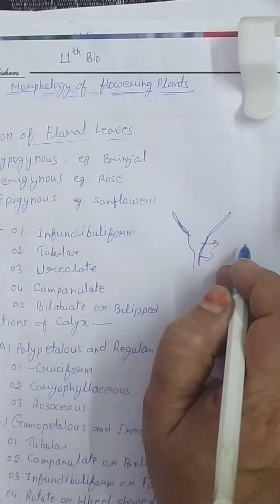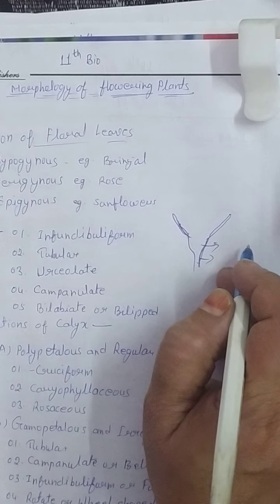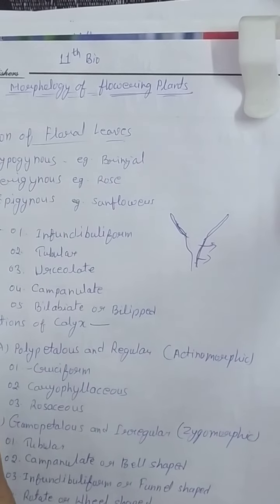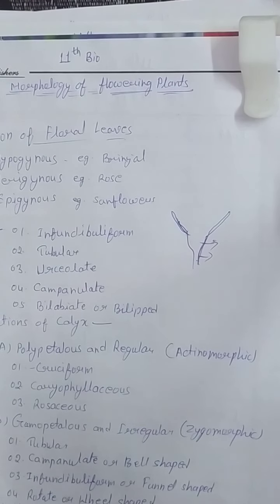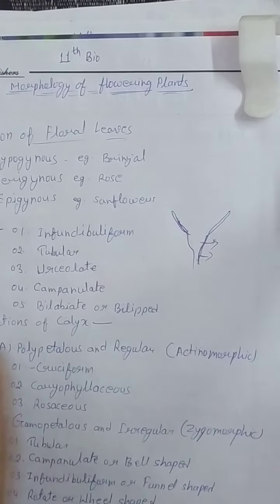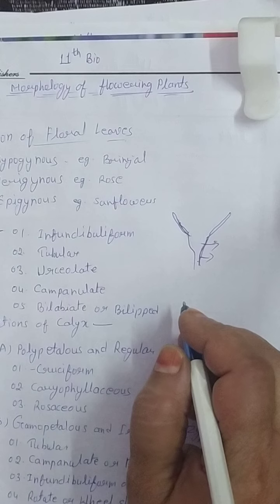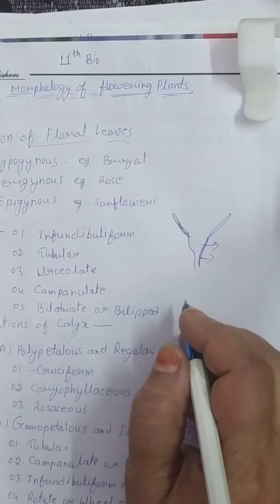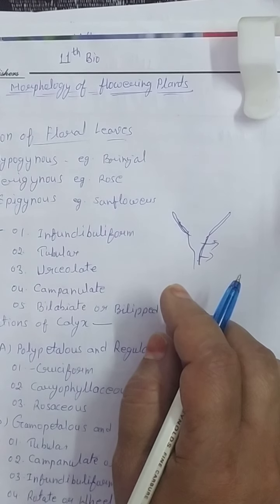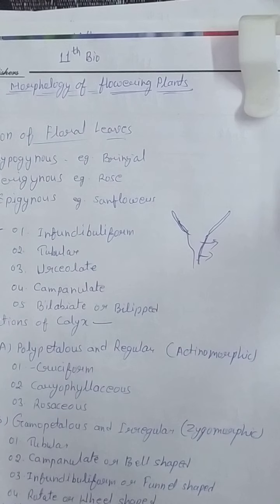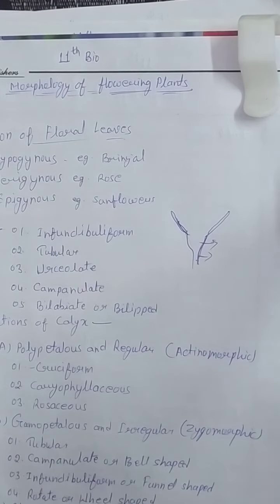When the sepals fall off as soon as the flower bud opens, they are called deciduous. When they survive until the withering of petals, as in lotus, or sometimes the sepals remain attached to the fruit for a longer period, they are said to be persistent, like in brinjal and pea.